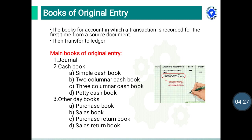Book of original entry. These are the books of account in which a transaction is recorded for the first time from the source document. Later, transactions from these books are transferred to the ledger. The book of original entry is classified into three classes: journal, cash book, and other day books. Cash book is sub-classified into four types: simple cash book, two-column cash book, three-column cash book, and petty cash book. Other day books include purchase book, sale book, purchase return book, and sale return book.